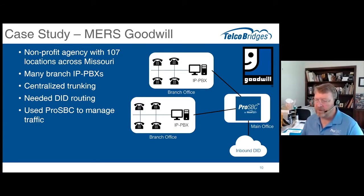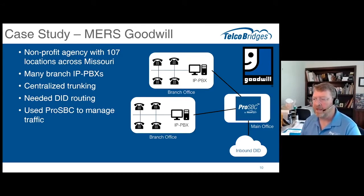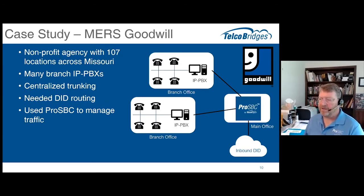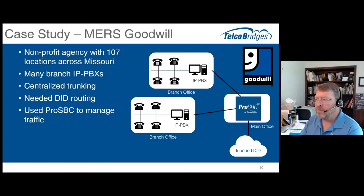So the routing function, plus delivering the services to not only the appropriate branch office but traversing the NAT to get to the IPPBX at that particular branch, is what they needed help with. This worked out really, really well for them. They were very happy with it — it met their budget requirements and let them manage their service providers much more efficiently by consolidating onto a couple of operators for their local long-distance traffic.